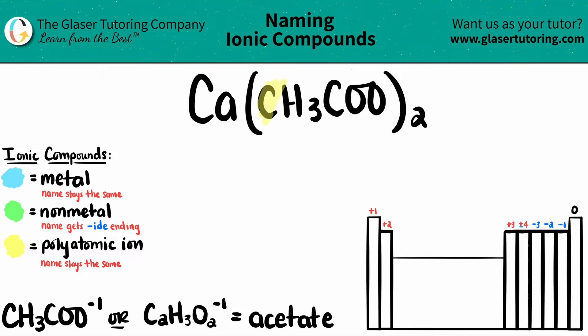So CH3COO is the polyatomic ion. Since this is an ionic compound, the Ca, which is calcium, is the metal. Ionic compounds have to have a metal in them, and calcium is right here on the periodic table.